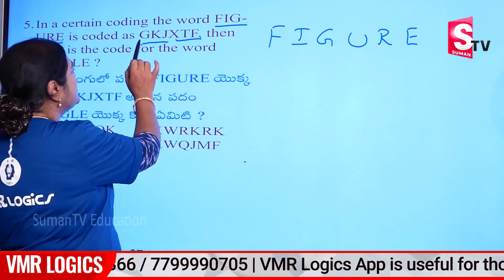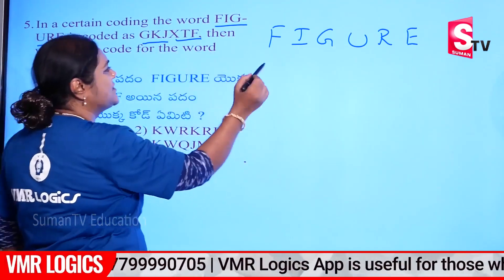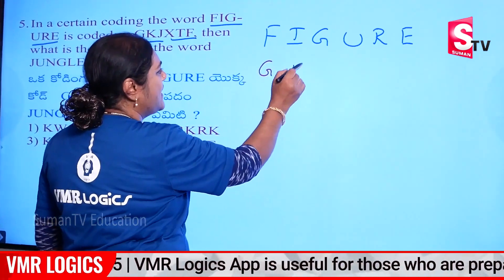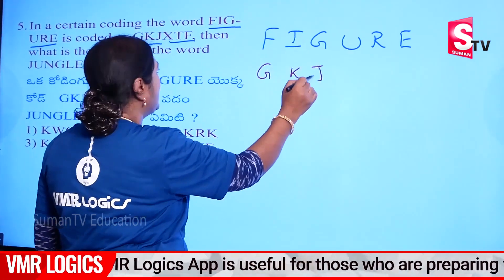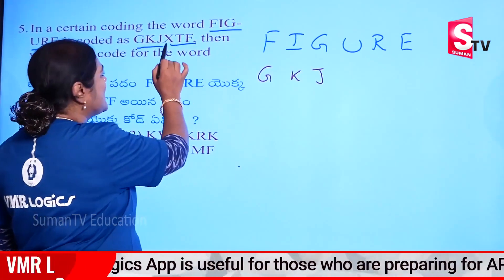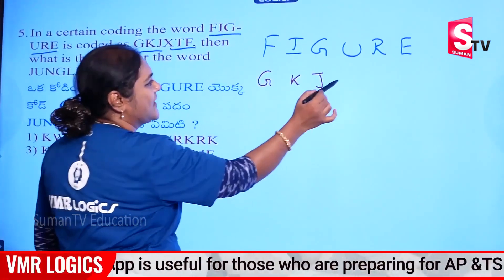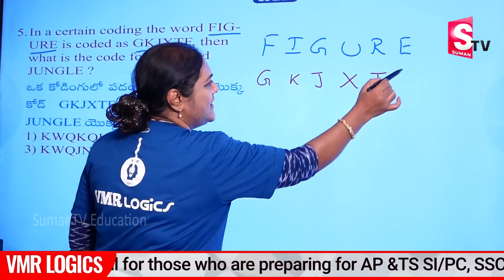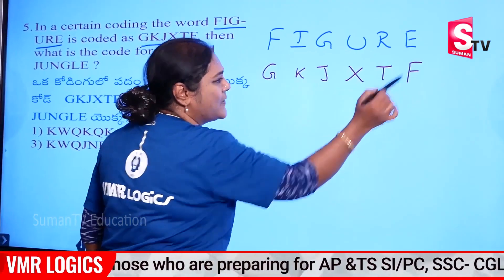Here it is: G, K, J, G, K, J, X, T, F. X, T, F. Now the code here.